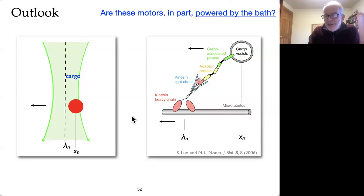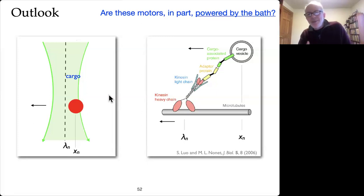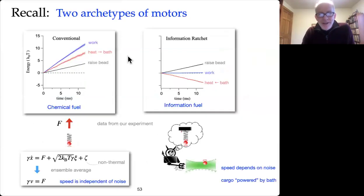In a traditional view of molecular motors, they're powered by the hydrolysis of ATP and things like that. But the question is, are these motors in part powered by the bath? Is the motion of the cargo coming in part from the surrounding environment? And so again, to go back to this slide that I showed you at the beginning of two different types of motor.